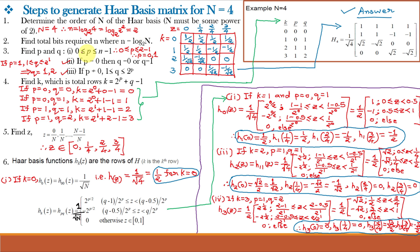The next step is to find p and q, where p ranges from 0 to n minus 1, that is 0 to 1. So p equals 0 and 1. When p equals 0, q equals 0 or q equals 1. When p is not equal to 0, that is p equals 1, q ranges from 1 to 2 raised to p. Since 2 raised to 1 is 2, q equals 1 and 2. So the four combinations of p and q are: (0,0), (0,1), (1,1), and (1,2).